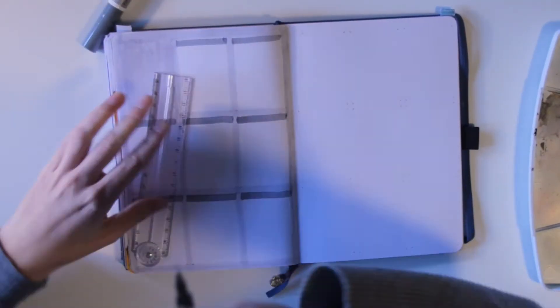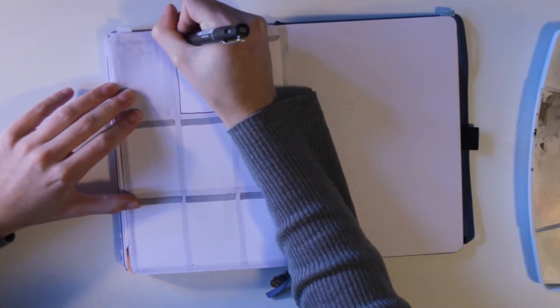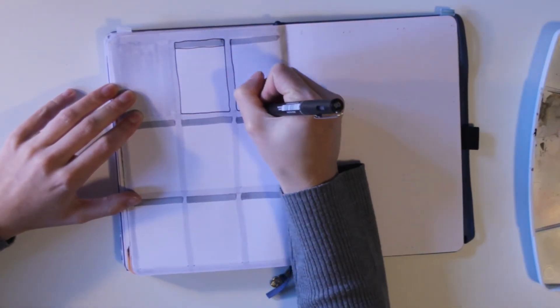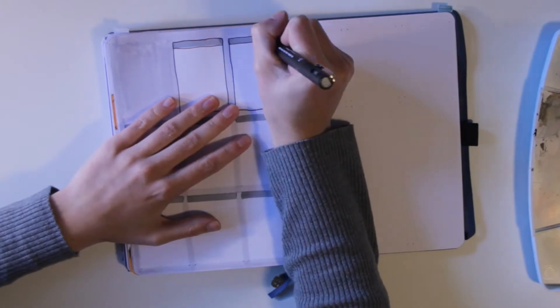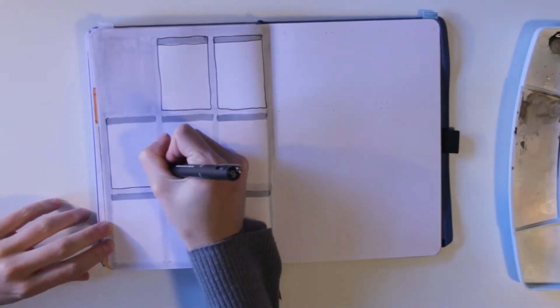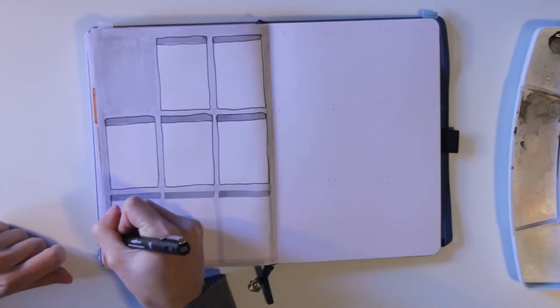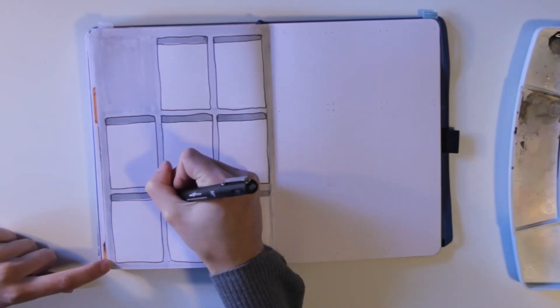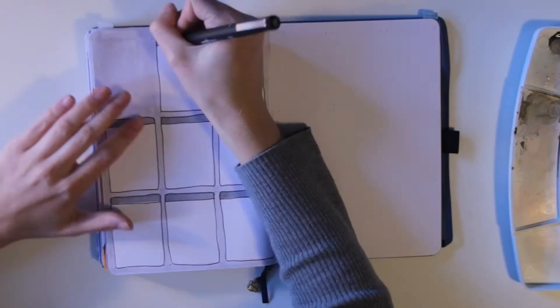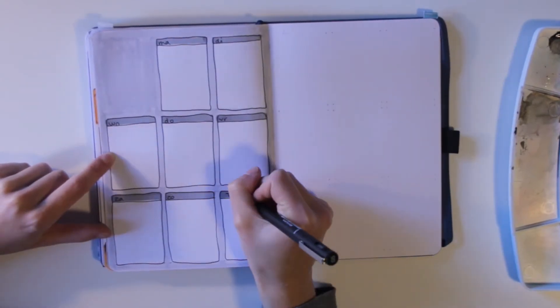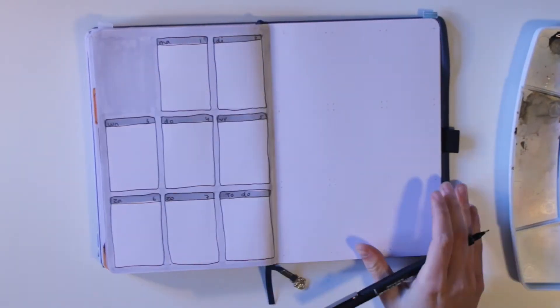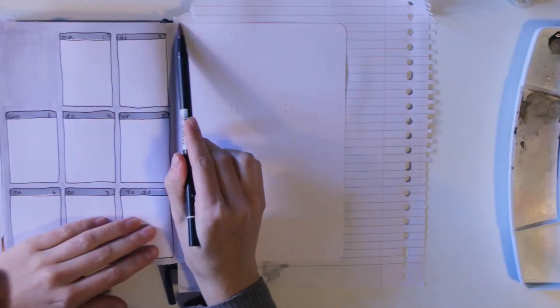So I think I'm going to do two page weekly spreads again for December. But I wasn't sure if I would have enough pages to make two page weekly spreads for both November and December. So I decided to just do it for December. And it's fine. I usually don't need a lot of space for my weeklies, or for my days I mean.